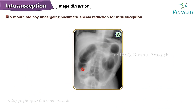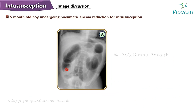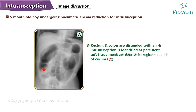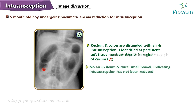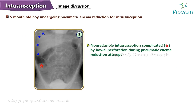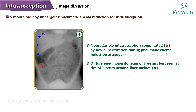Here is an image of a 5-month-old boy undergoing pneumatic enema reduction for intussusception. Image A: The rectum and colon are distended with air, and the intussusception is identified as a persistent soft tissue meniscus density in the region of the cecum; there is no air in the ileum and distal small bowel, indicating the intussusception has not been reduced. Image B: Non-reducible intussusception complicated by bowel perforation during pneumatic enema reduction attempt, with diffuse pneumoperitoneum (free air) best seen as a rim of lucency around the liver surface (arrowheads).